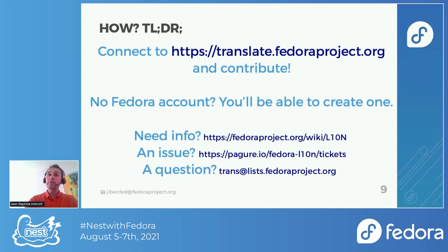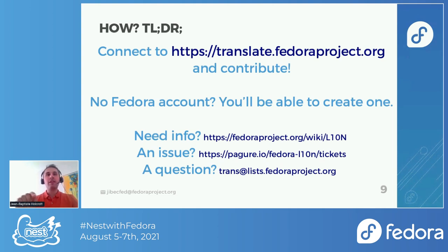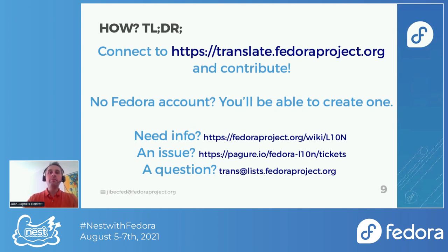If you have no Fedora account, that's very easy — it will lead you to the place to create a Fedora account. A few pieces of information and one CLA — the Contributor License Agreement — to sign, to confirm you agree to the rules of our community. If you need more information, there is a wiki page, the localization team page. It contains hundreds of links about how to join, how to translate using Weblate, what the list of teams is, and what the different rules are. It's very easy to find information.